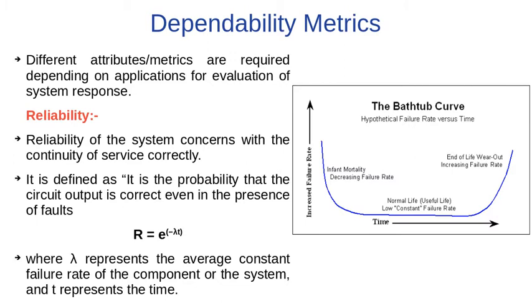In other words, reliability is defined as the probability that the circuit output is correct even in the presence of a fault. As shown in this figure, the Bathtub curve is the famous curve which shows the reliability of a system.